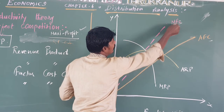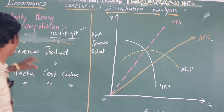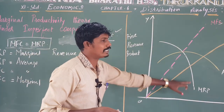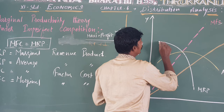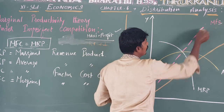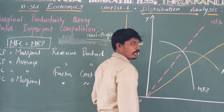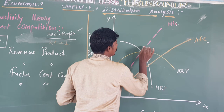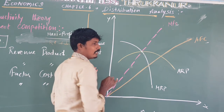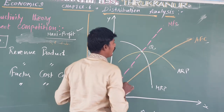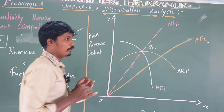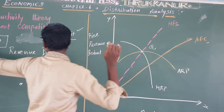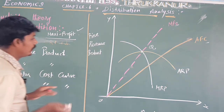If you look at the MFC curve and the MRP curve, they touch and intersect. The MRP curve comes downward, and MFC cuts it from below. Where MFC intersects MRP, you can see two intersect points. The intersection point is called Q. At point Q, MRP and MFC are equal — this is the equilibrium point.